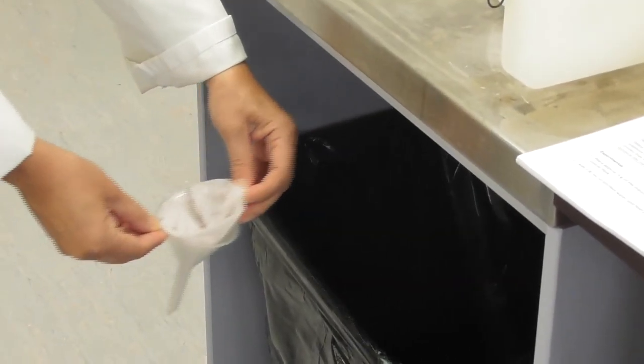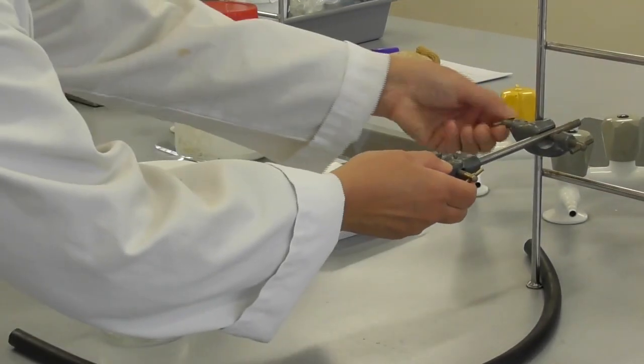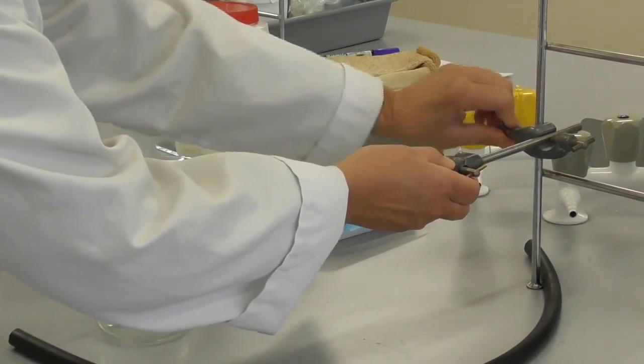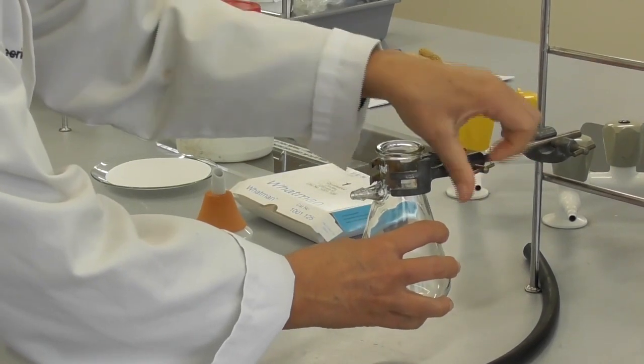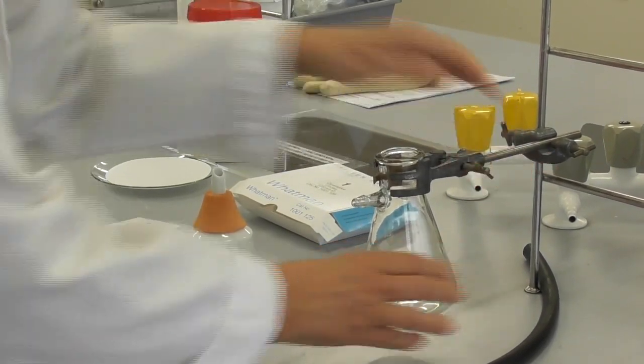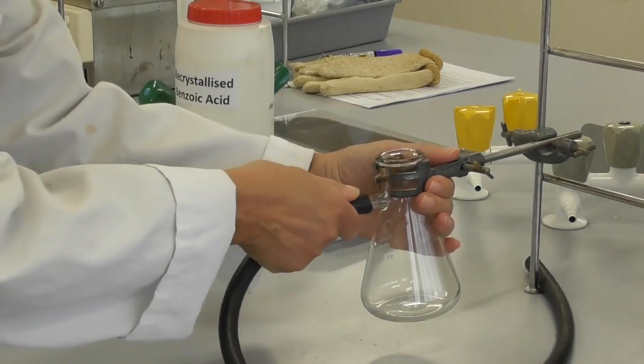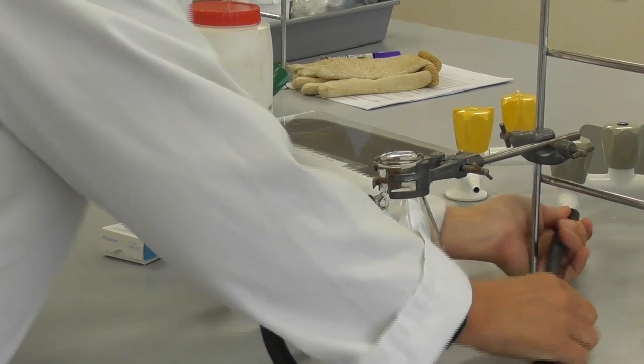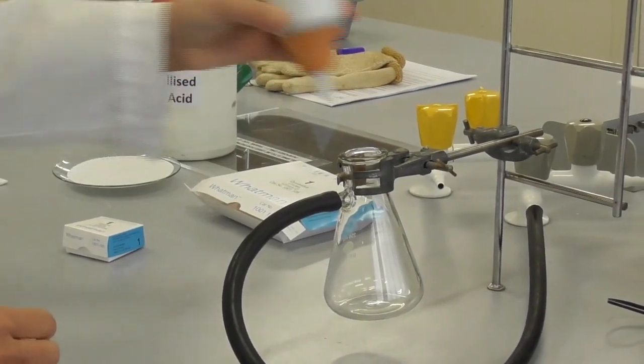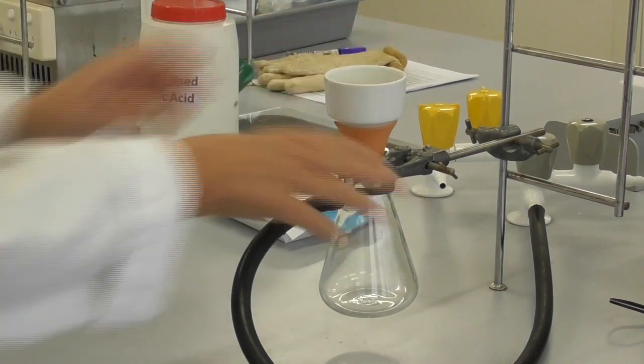The used filter paper gets thrown out into the rubbish. Next we set up the vacuum filtration. We clamp the vacuum flask securely, add the vacuum hose and connect it to the vacuum outlet, and then set the buchner funnel on top of the vacuum flask.